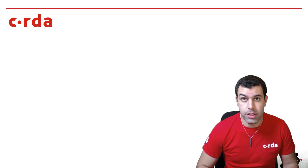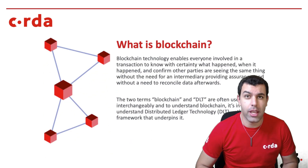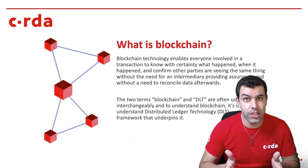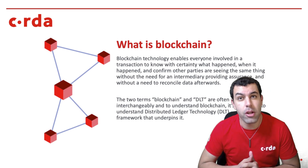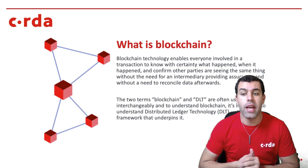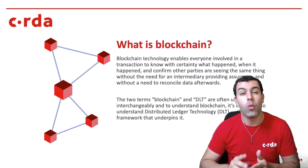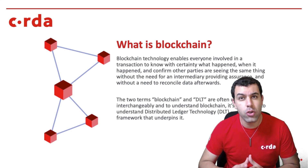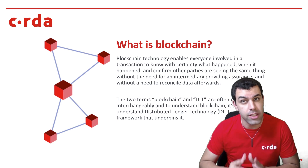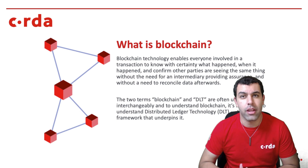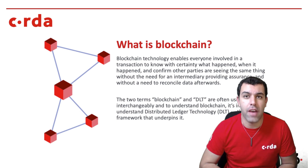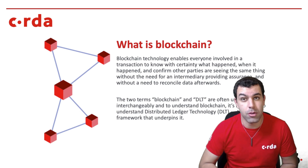This brings up the question: what is blockchain? The basic answer is that blockchain technology enables everyone involved in a transaction — such as an update to that spreadsheet we talked about — to have certainty of what happened and when it happened, and to confirm that everyone who could be affected by that transaction gets to sign off on its authenticity and accept it together. And once that transaction has happened, it cannot be edited after the fact, so you have assurance that you don't have to reconcile your data afterward. This can be really powerful.